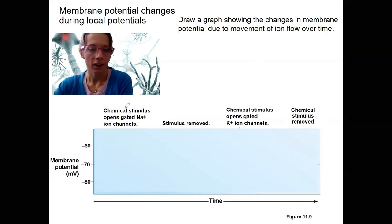So if a chemical stimulus opens gated ion channels, for example glutamate, we're here at rest. What's going to happen? Depolarize. When it's removed, repolarize.